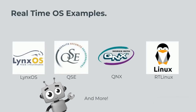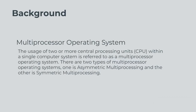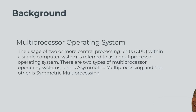Here are some examples of a real-time OS. Now we are going to look into the background of multi-processor OS, where the usage of two or more central processing units within a single computer system is referred to as a multi-processor operating system.